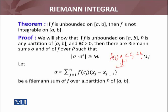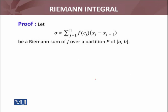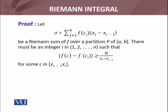Now f is unbounded. It means there must exist some number - there must be an integer i in the partition such that |f(c) - f(c_i)| ≥ m/(x_i - x_{i-1}) for some c in [x_{i-1}, x_i]. There must exist a real number c_i in that interval such that this inequality holds greater than or equal to m over (x_i - x_{i-1}).